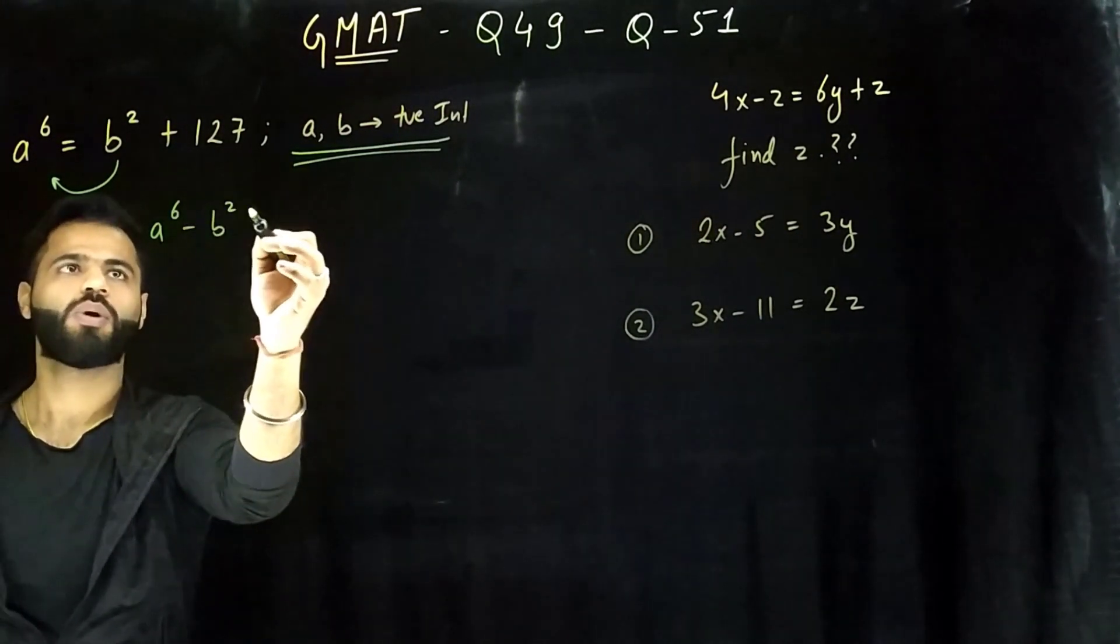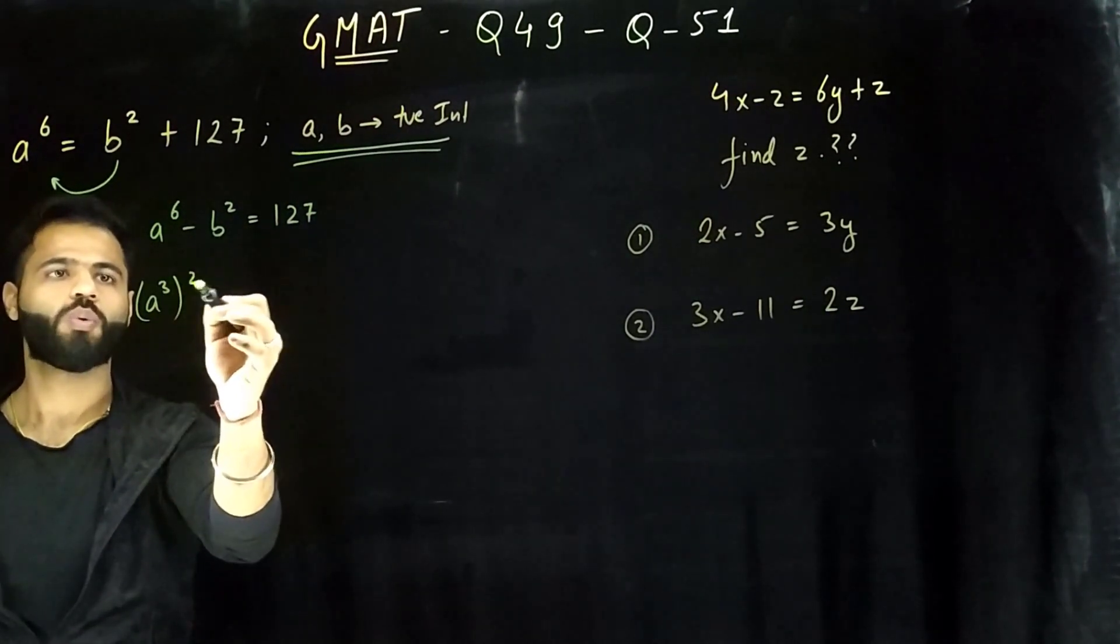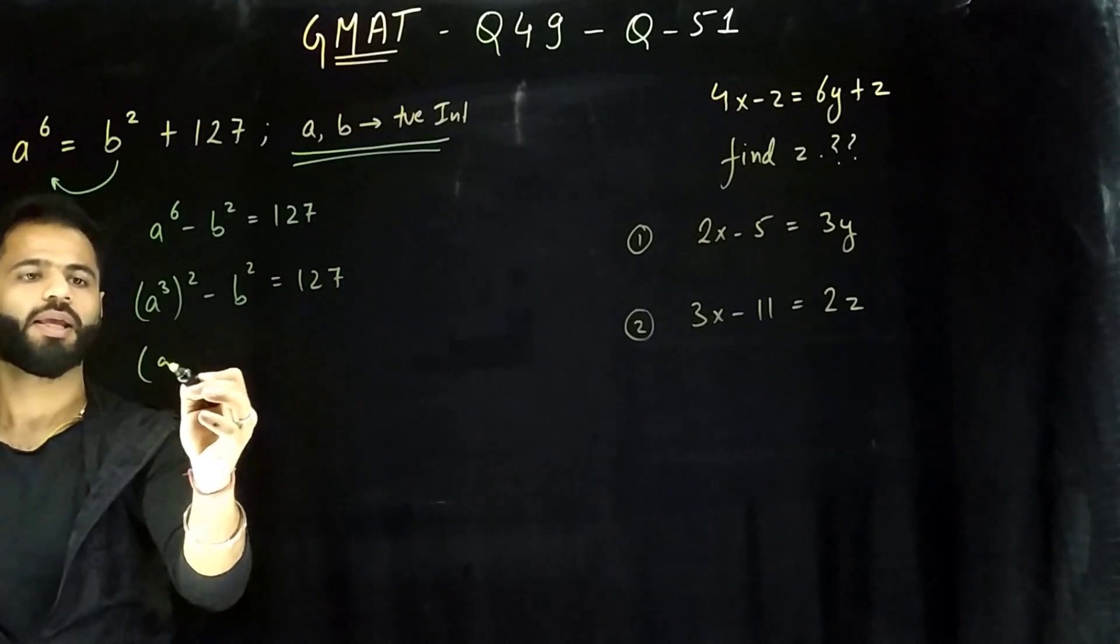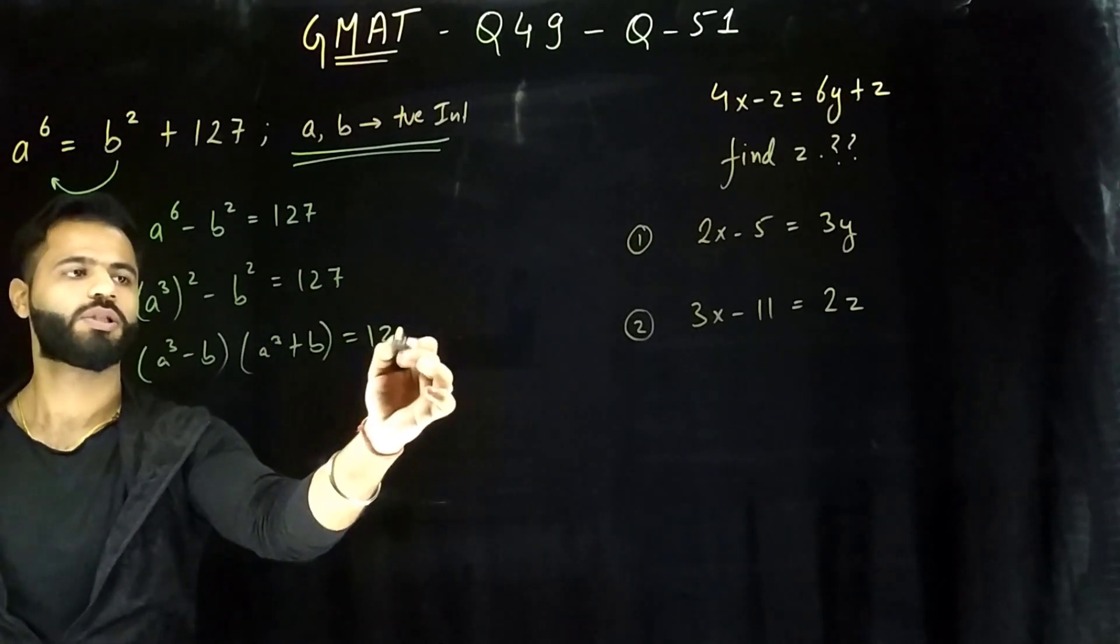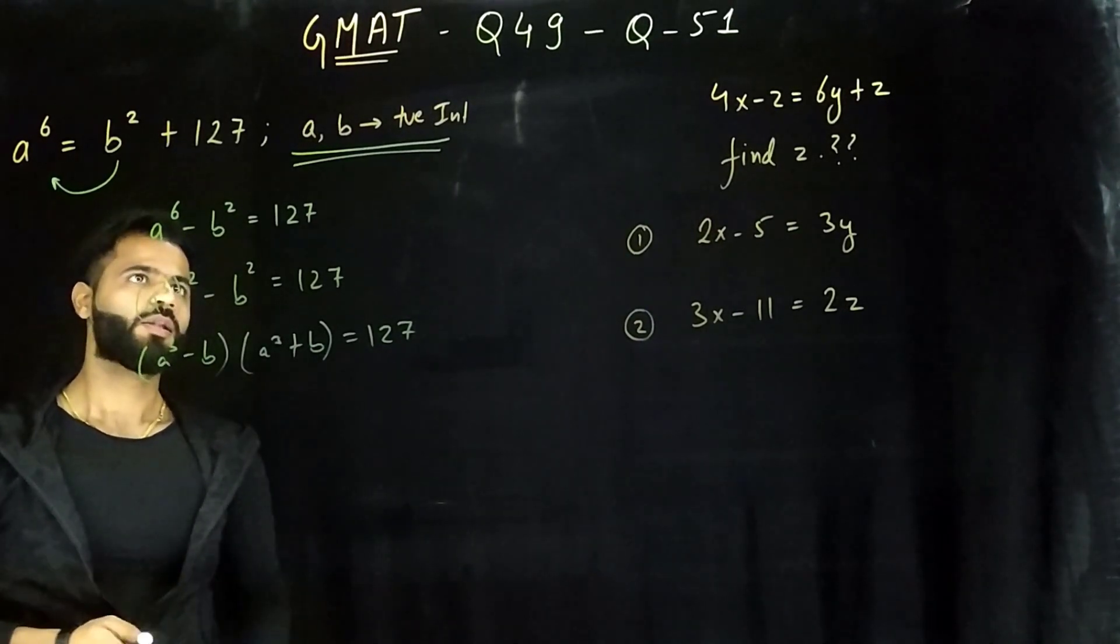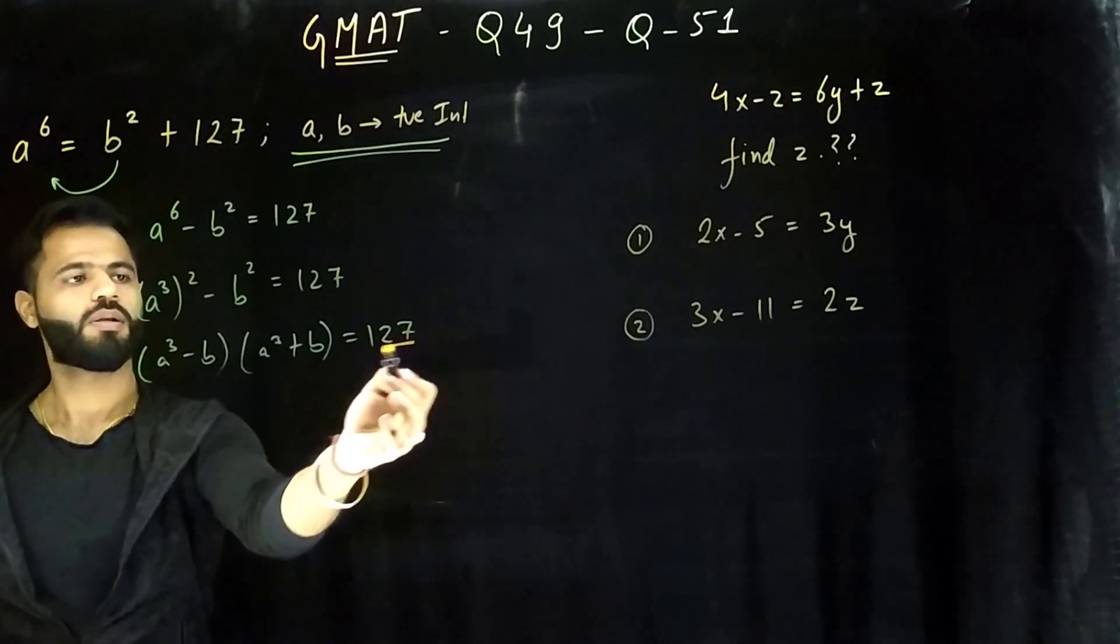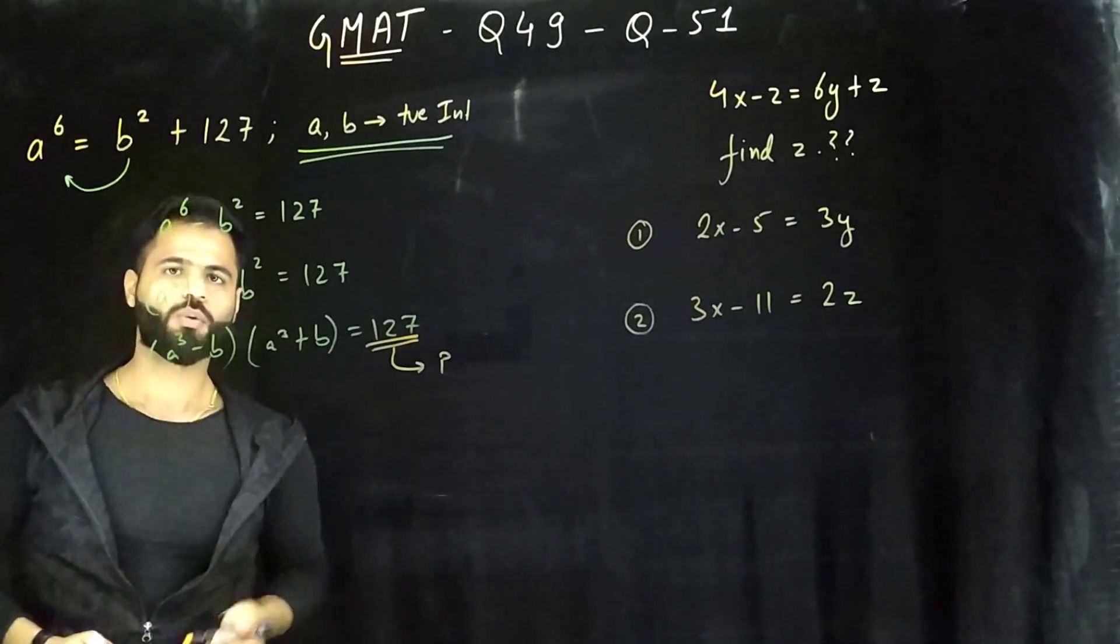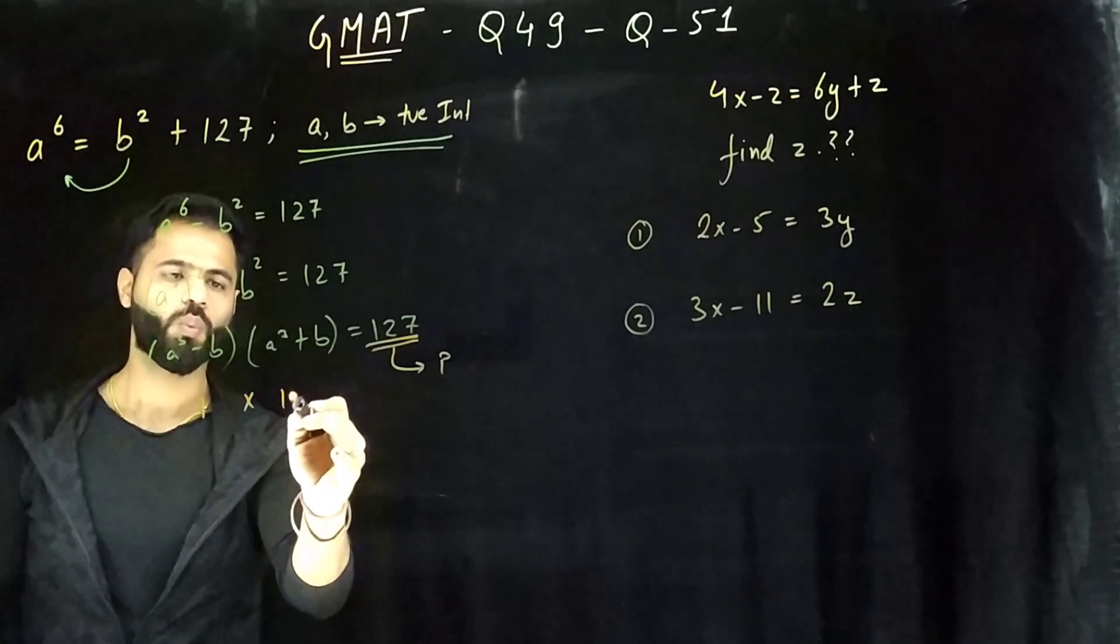So what I will have is a to power 6 minus b square equals to 127. If I write this down as a cube squared minus b squared equals to 127 and apply a squared minus b squared formula, I will come down to this point: (a³ - b)(a³ + b) = 127. Now I am stuck. What to do? The point is, do you notice this number?